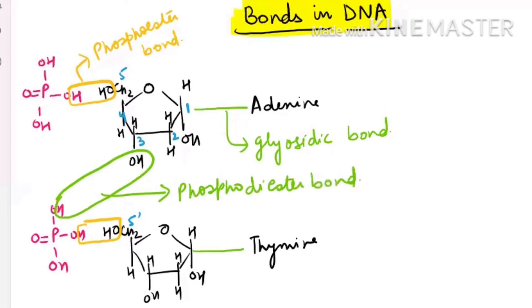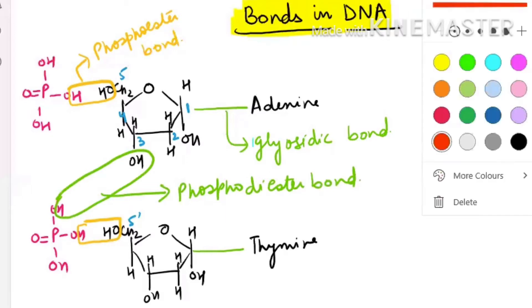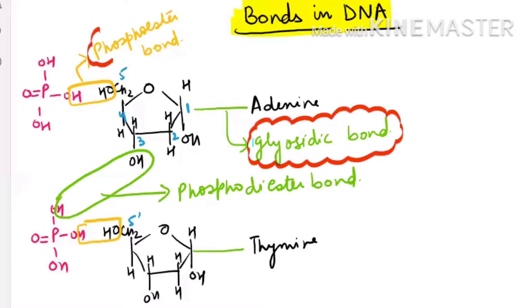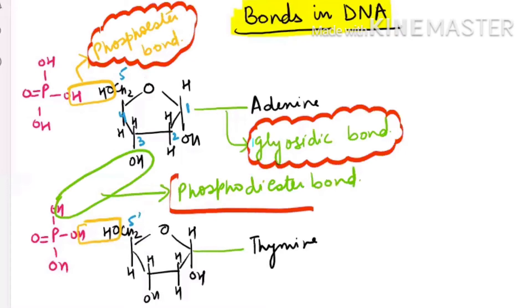So in total, three bonds are present: one is the glycosidic bond, one is the phosphoester bond, and another is the phosphodiester bond.